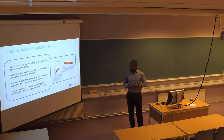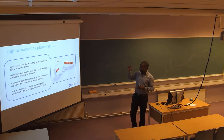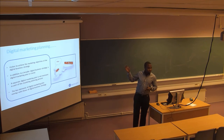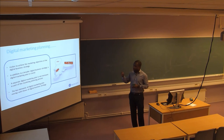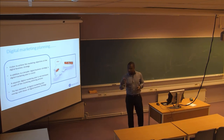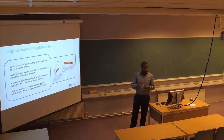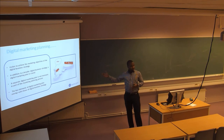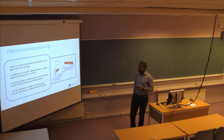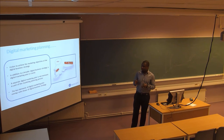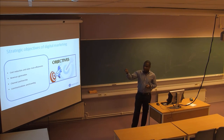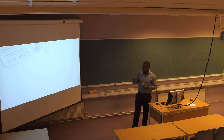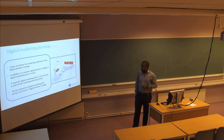Like any other strategy process, we usually have objectives, and to achieve them you need a plan. The digital marketing planning process involves creating a plan to reach those objectives — it is a very important aspect of business strategy. We need to define a clear plan on how to achieve the four objectives. This is the focus of today's class.